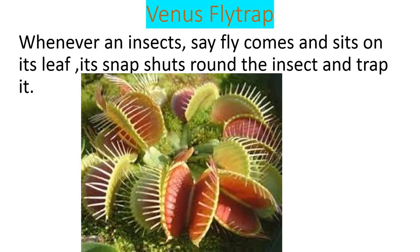The Venus flytrap: you can see this plant in the picture. It has sharp, pointed structures. Whenever an insect lands on it, it closes shut and the insect gets trapped inside.